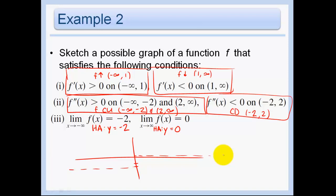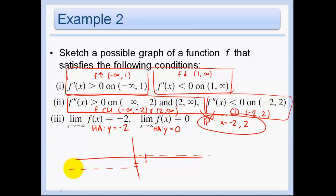Since the function is changing from concave up to concave down at negative 2 and at 2, we know inflection points are at x equals negative 2 and x equals 2 — that's where concavity changes. Also, since the function is increasing then decreasing, f prime is going from positive to negative, so we have a max at x equals 1.